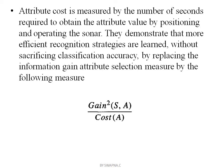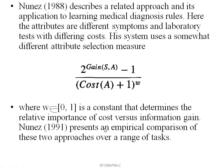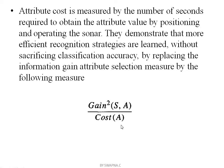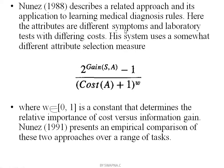How we calculate gain with cost is as follows: Gain squared (S, A) divided by Cost(A). This is the general formula. Nunez in 1988 describes a related approach applied to learning medical diagnosis rules, where the attributes are different symptoms and laboratory tests with different costs. This system uses a somewhat different attribute selection measure using this formula.